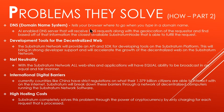Next is DNS, or domain name system — that's what tells your browser where to go when you type in a domain name. They have an AI-enabled DNS server that will receive the DNS request along with the geolocation of the requester and find the closest available Substratum node that is able to fulfill the request.